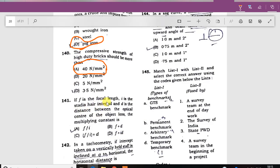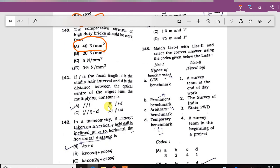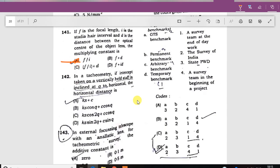If F is the focal length and I is the stadia interval and D is the distance, then it's F by I, focal length by stadia interval. In trigonometry, if intercept taken on vertically held staff inclined at theta, then the horizontal distance is Ks plus C, no it's Ks cos squared theta plus C cos theta. The answer is C.